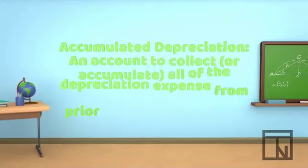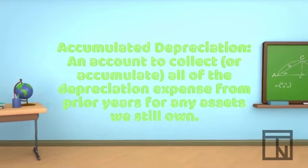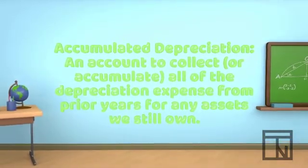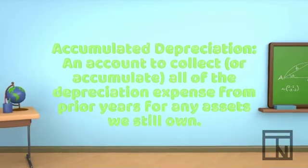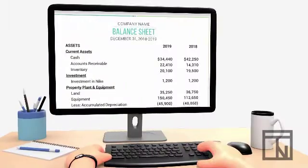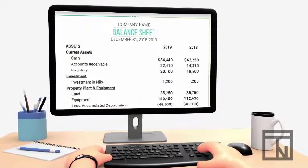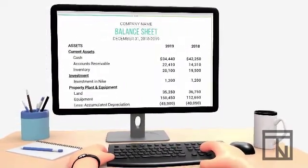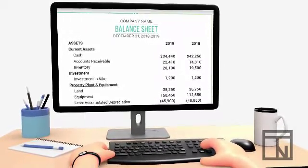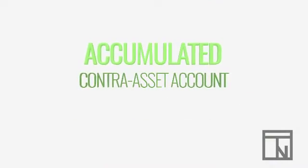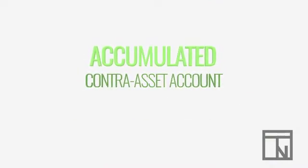Instead, we are going to introduce a new account called accumulated depreciation. Accumulated depreciation is where we collect, or accumulate, all of the depreciation expense from prior years for any assets we still own. Accumulated depreciation belongs in the long-term assets category on the balance sheet, but because it only gets credited, it will always be a negative number. This makes accumulated depreciation a contra-asset account, since it has an opposite normal balance from its category.